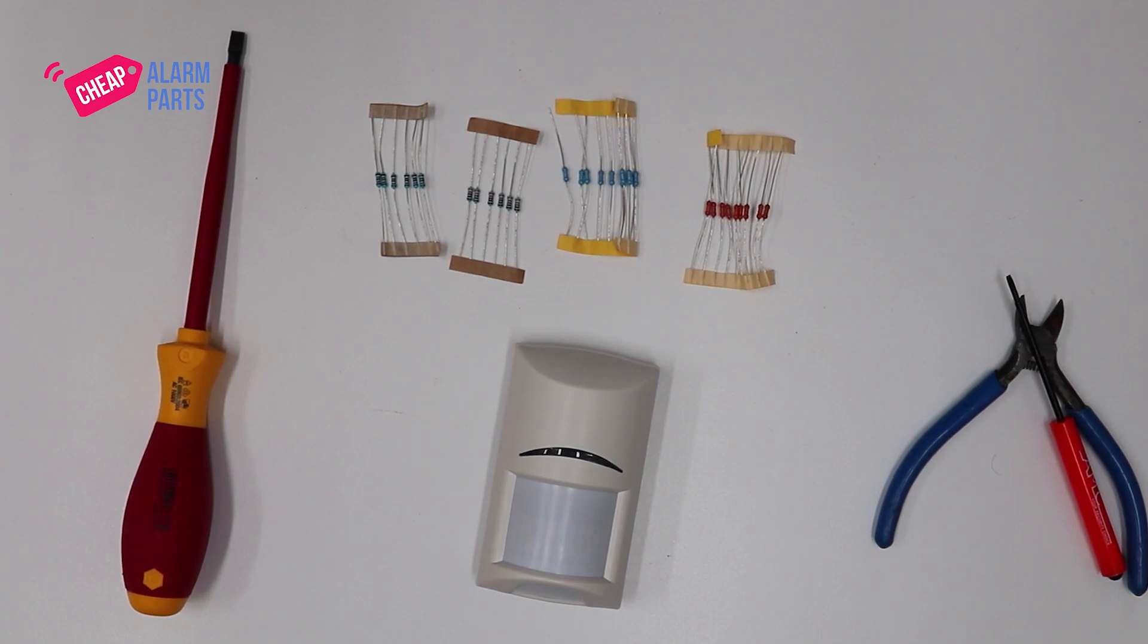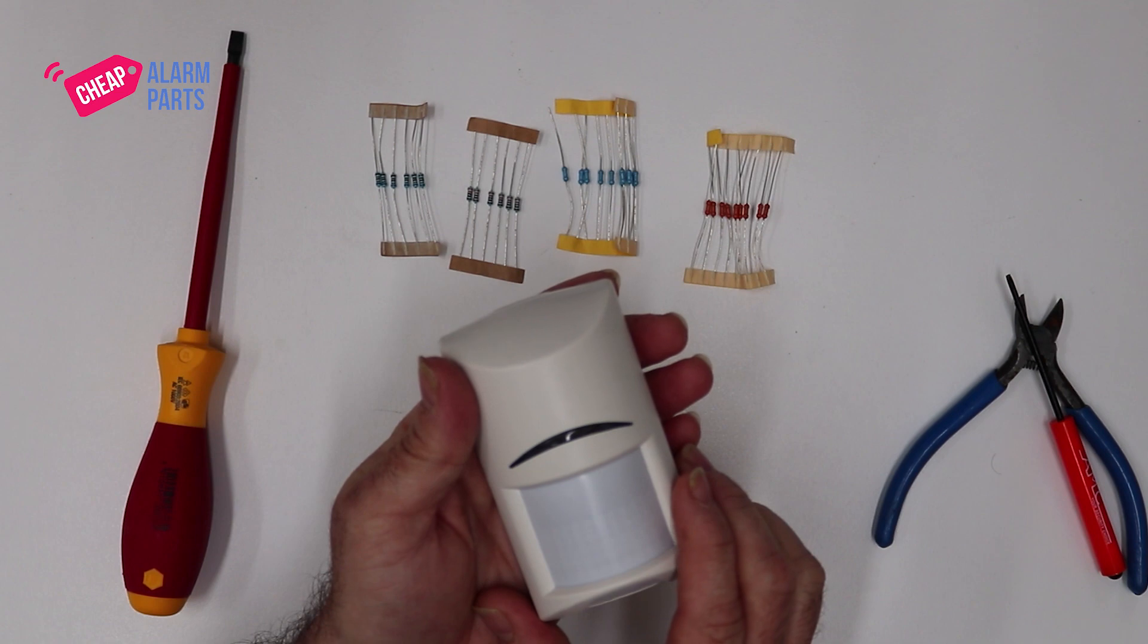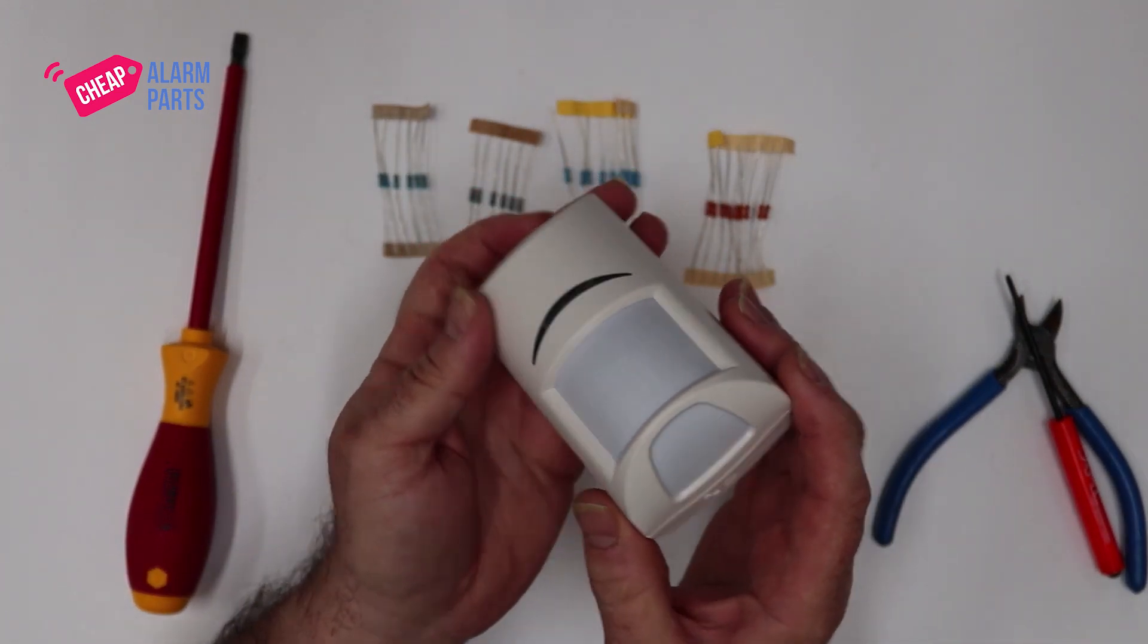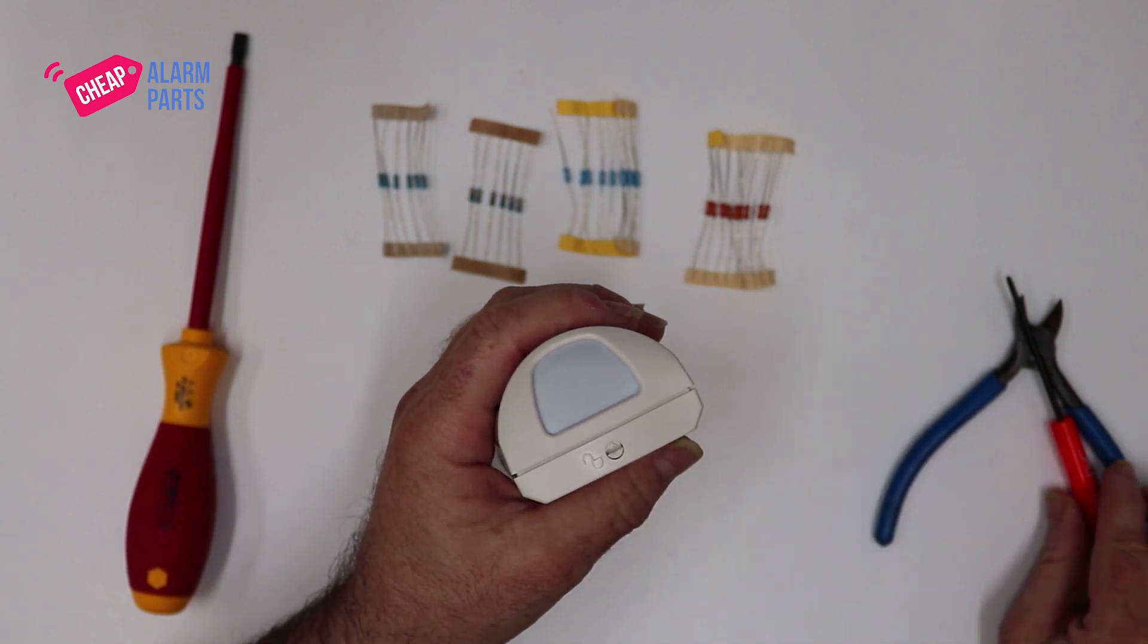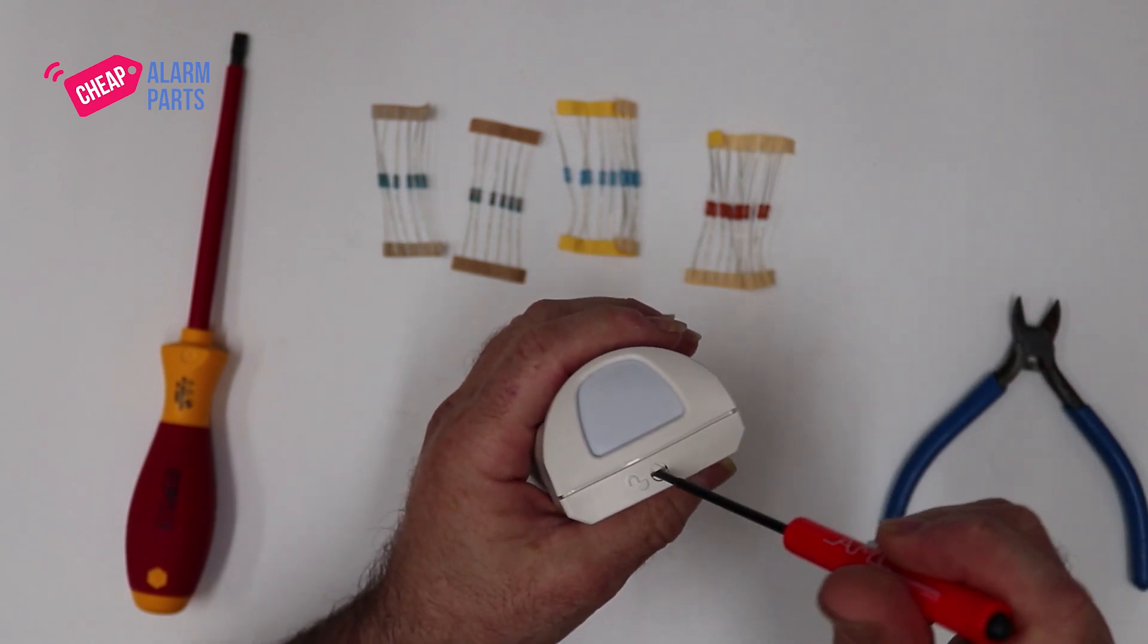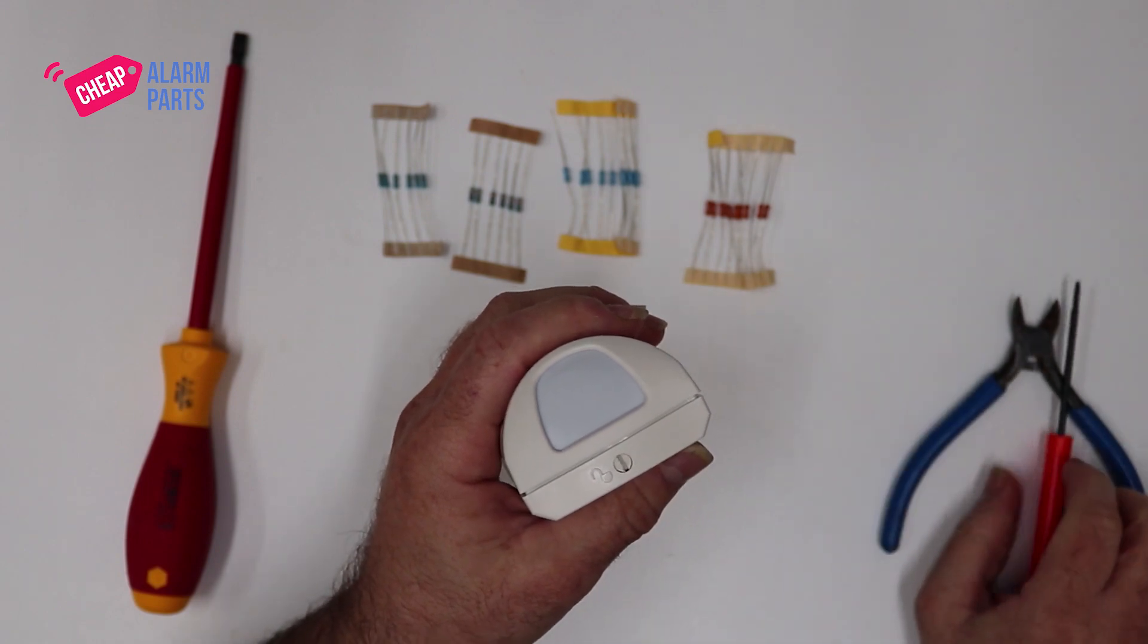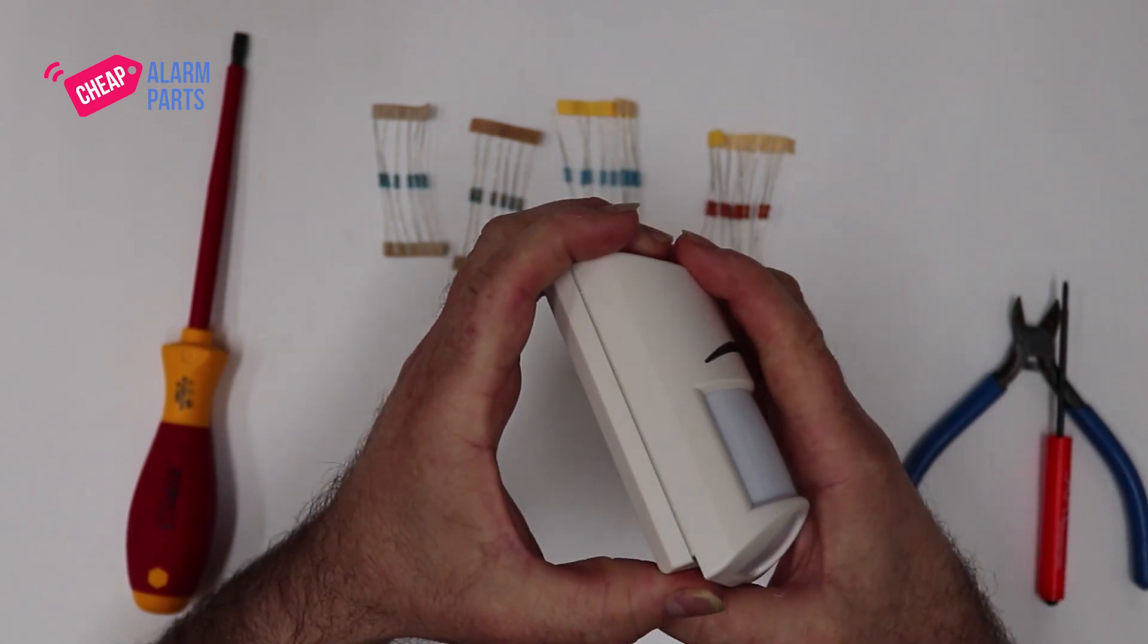Hi, Saul again from Cheap Alarm Parts. Today we're going to show you how to wire up a Bosch PIR. First thing we need to do is open it. There's a little picture of a lock at the bottom. Just put a screwdriver into the slot, turn it anti-clockwise a quarter turn, and then push the top of the unit down and it pops open like that.